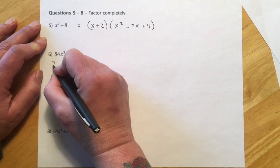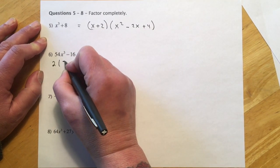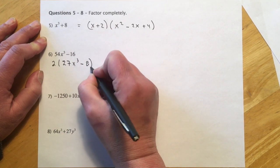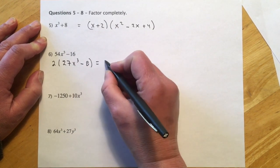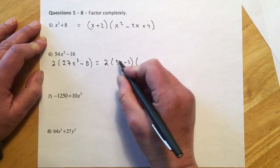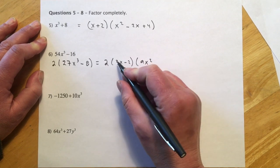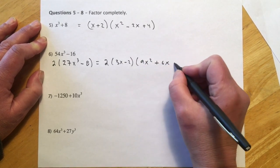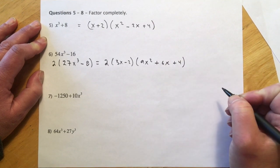That one looks like there's a GCF of 2, so that's going to get us down to 27x³ minus 8. Now you can see our cubes, so that will be 2 and then 3x minus 2, 3 times 3, 9x², 3 times 2 will get us a plus 6x, 2 times 2 for a 4 on the end.